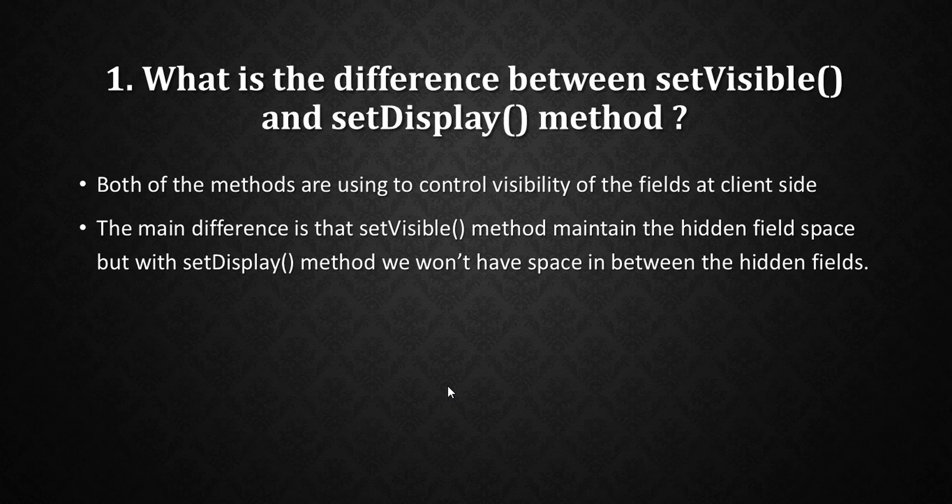The first question is: what is the difference between setVisible and setDisplay methods? Both methods are used to control the visibility of fields at the client side. The main difference is that the setVisible method maintains the hidden field's space, but with setDisplay, we won't have that space where the hidden field was. Both methods have the same core functionality — the difference is mainly about form alignment.